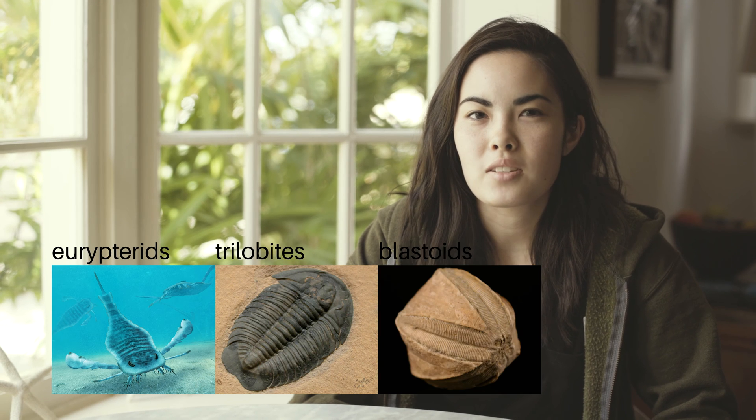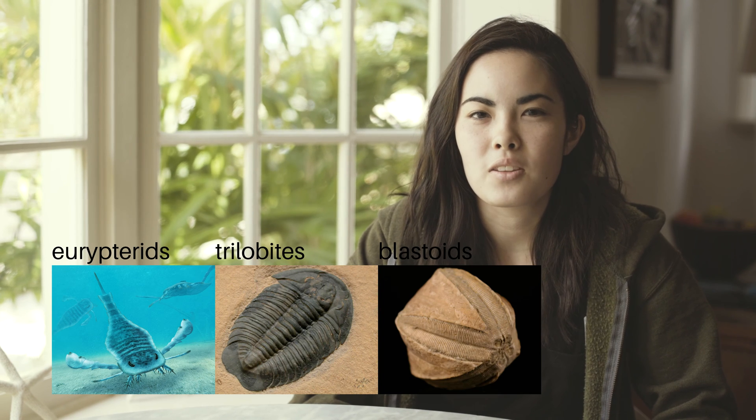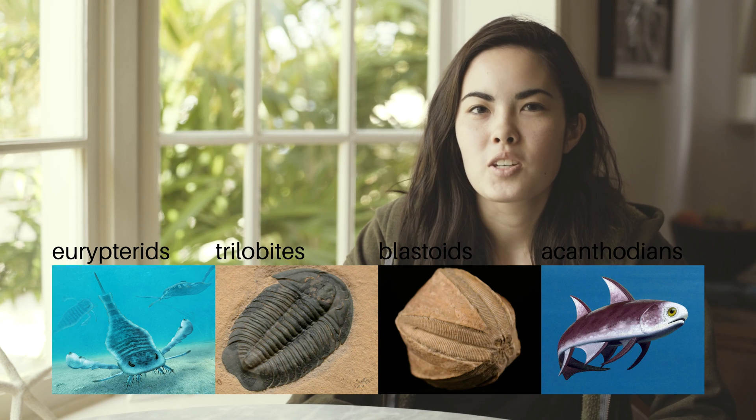Among species that went extinct during the Permian mass extinction included Eurypterids, Trilobites, Blastoids, and Acanthodians.